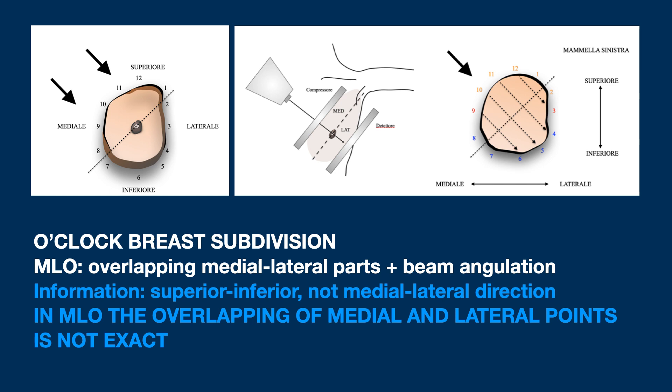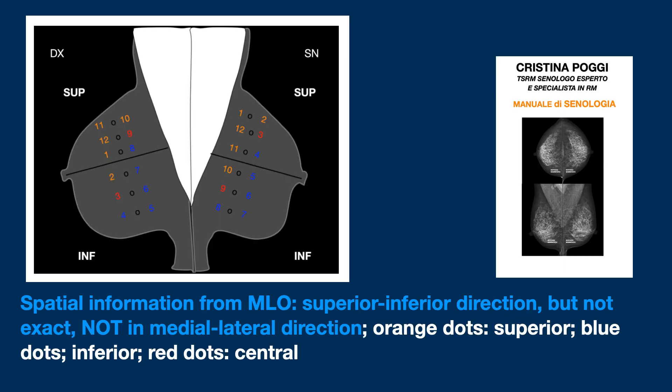The same thing happens with the MLO projection with the added complication of the beam angulation. There is no exact overlapping of the medial and lateral points, and this prevents correct information in the superior and inferior direction. In the typical layout of the MLO, I can say that some points are definitely located superiorly, some inferiorly, but not for all of them. The obliquity of the beam is essential to document deeper tissue, but you lose topographical reality because of that.